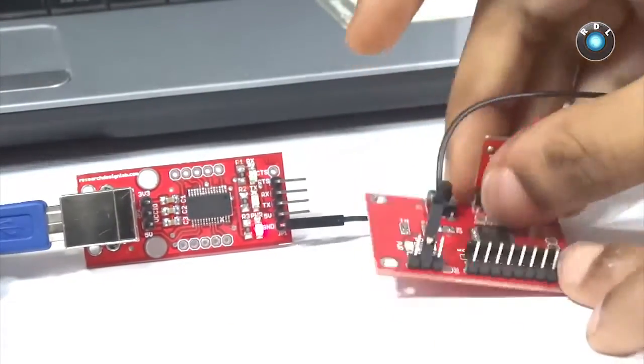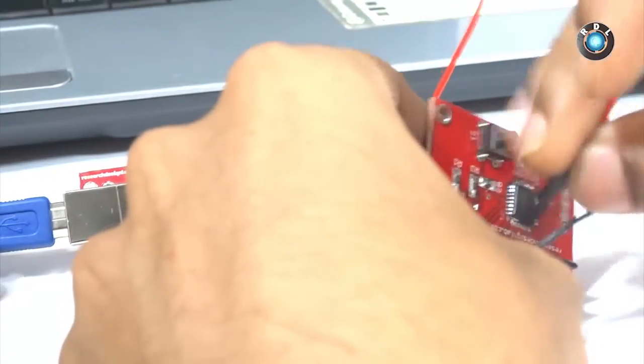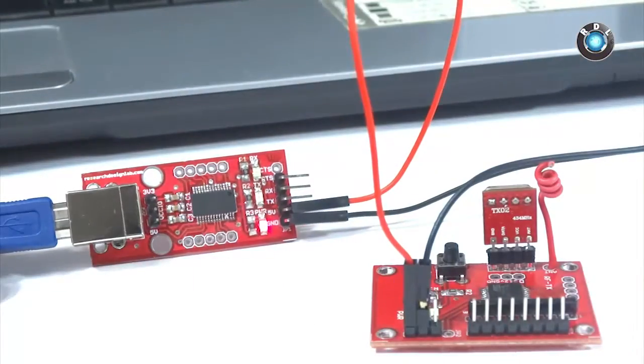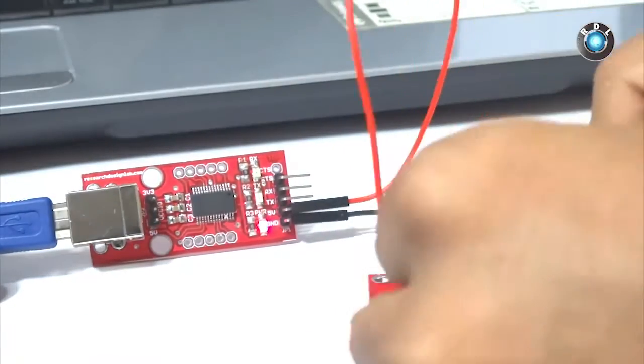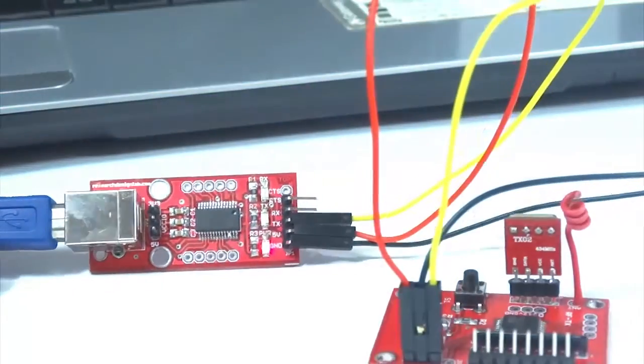Red wire here goes to plus 5V of the FT232 breakout port and 12V of the RF transmitter board. The black wire here goes to the ground of the respective boards. The yellow wire here gets connected to RX of the RF transmitter and TX of the FT232 breakout board.